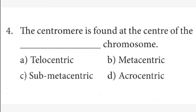Fourth question: the centromere is found at the center of the dash chromosome. Answer is B option, metacentric chromosome. The centromere is found at the center in a metacentric type chromosome.